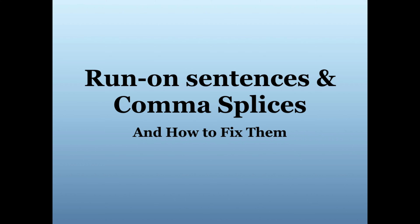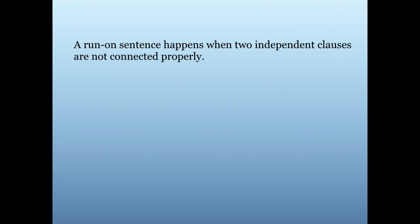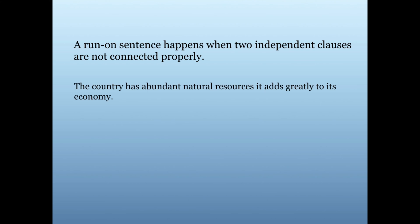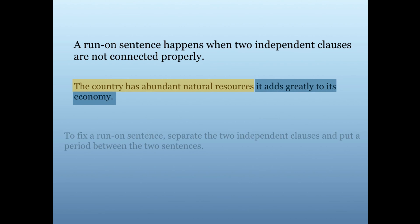A run-on sentence happens when two independent clauses are not connected properly. An independent clause is a group of words that can be a sentence by themselves. For example: 'The country has abundant natural resources. It adds greatly to its economy.' There are two independent clauses here — the first is 'the country has abundant natural resources,' and the second is 'it adds greatly to its economy.' Both could be sentences all by themselves, and in English we cannot connect two complete independent clauses without proper punctuation.